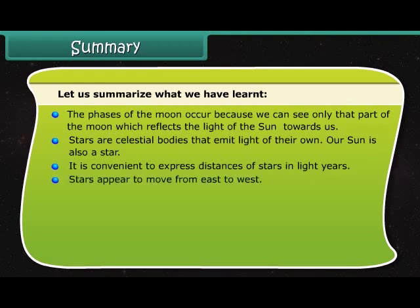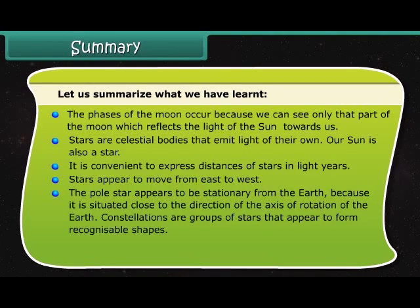Stars appear to move from east to west. The pole star appears to be stationary from the earth because it is situated close to the direction of the axis of rotation of the earth. Constellations are groups of stars that appear to form recognizable shapes.